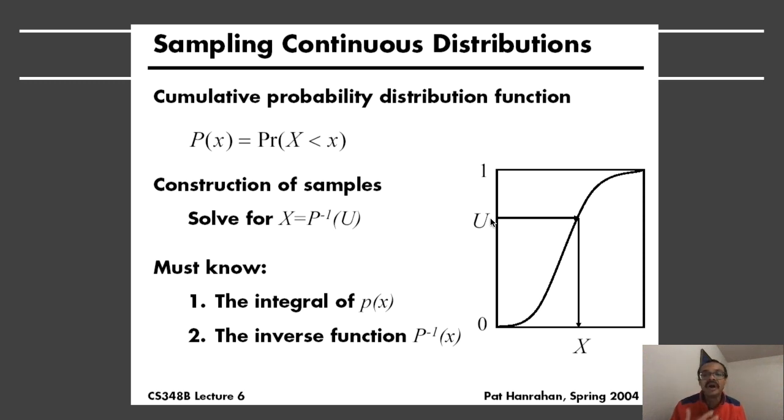And then invert the cumulative distribution function. Find p inverse of this uniform value. That will give you your value of x in your original probability distribution function, and then you can associate the appropriate function and evaluate what you want to do with that sample x.